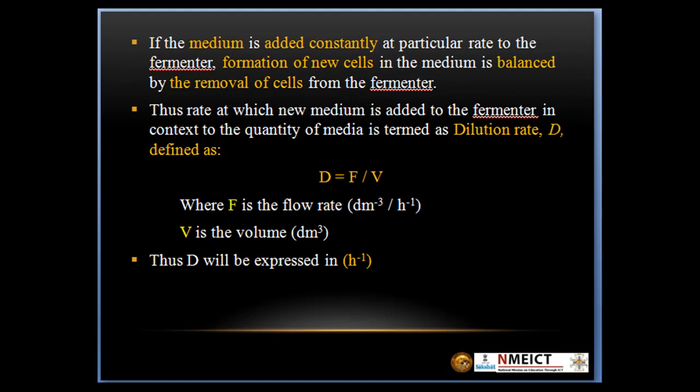If the medium is added constantly at a particular rate to the fermenter, the formation of new cells in the medium is balanced by the removal of cells from the fermenter. The rate at which new medium is added to the fermenter relative to the volume of the medium is termed as dilution rate D, defined as D = F/V, where F is flow rate and V is volume.